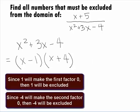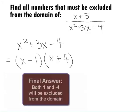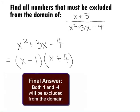The two values of x that would cause these factors to be 0 would be x equal 1 and x equal negative 4. Therefore, our final answer is 1 and negative 4 would have to be excluded from our domain.